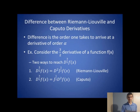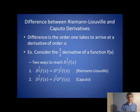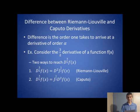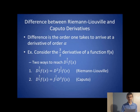The difference between the Riemann-Liouville and Caputo fractional derivatives is the order in which one integrates and differentiates to arrive at the derivative of order alpha. For example, consider the three-halves derivative of a function f(x). The Riemann-Liouville approach integrates by order one-half and then differentiates by order two, whereas the Caputo approach differentiates by order two first and then integrates by order one-half.